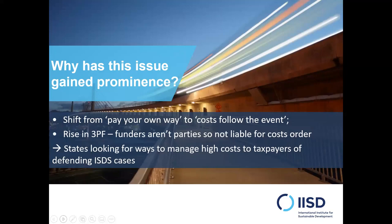I'll start by looking a little bit deeper at why we're here today talking about security for costs. Just to touch again on the explanation that Natalie gave in her introduction, what we're talking about today is an order made by the tribunal requiring a claimant bringing a claim against a state to pay a deposit that would cover the state's expected costs in defending itself against the claim. It can be in the form of things like a bank guarantee.